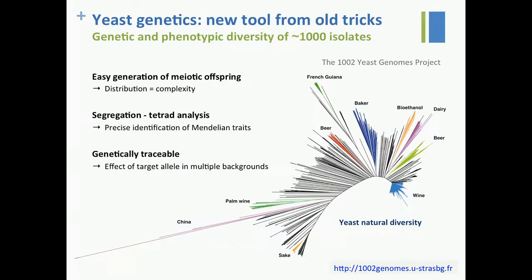What we wanted to do is to look at that using yeast, which is a very powerful model for different reasons. First, we have access to genetic and phenotypic diversity of more than 1,000 natural isolates, within the framework of the 1002 Yeast Genomes Project. Second, we can easily generate meiotic offspring and look at phenotype distributions. Importantly, we can look at segregation by doing tetrad analysis — that's how we precisely identify Mendelian traits in yeast. And once you have a monogenic mutation, it's easy to test it in different genetic backgrounds.